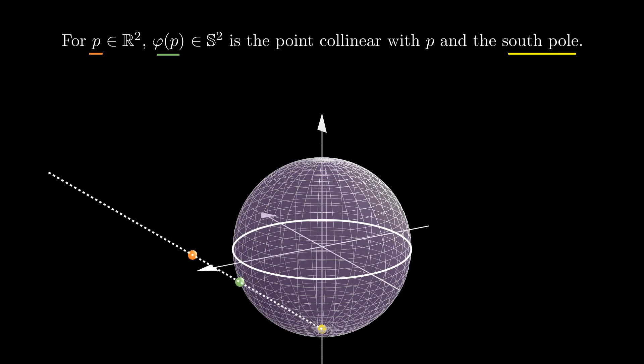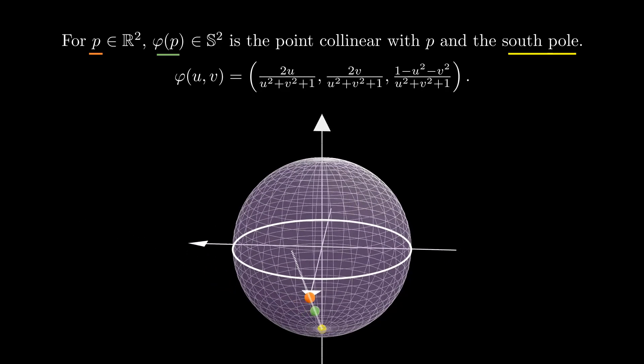If p lies inside the unit disk, then phi will lie in the upper hemisphere, and if p lies outside the unit disk, then phi will lie in the lower hemisphere. I will leave it to you to check that the function phi I just described is given by this formula, and is smooth and regular.